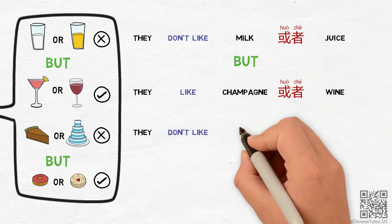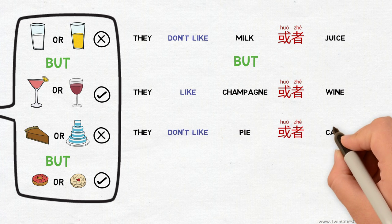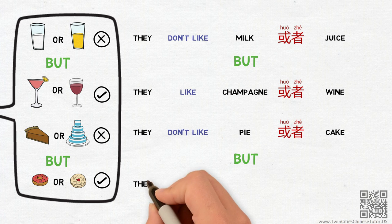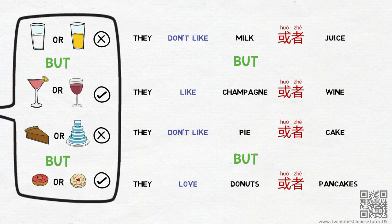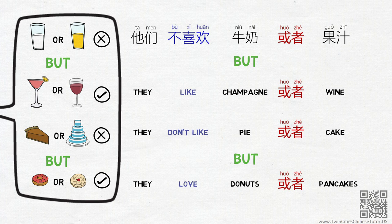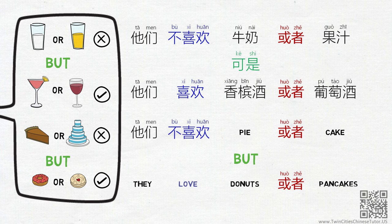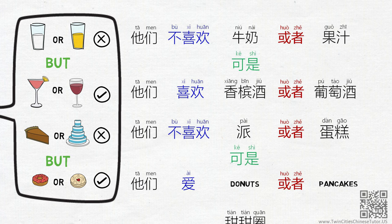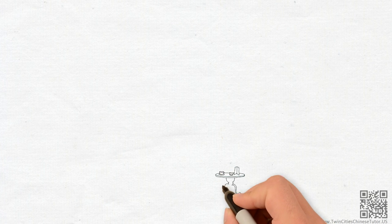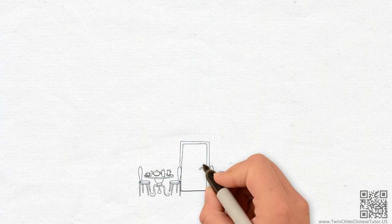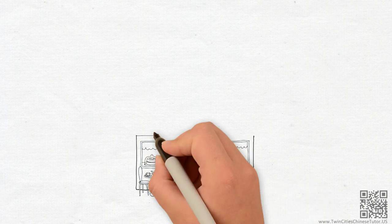They don't like pie or cake, but they love donuts or pancakes. In Chinese, they are, 他们不喜欢牛奶或者果汁, 可是他们喜欢香冰酒或者葡萄酒。 他们不喜欢派或者蛋糕, 可是他们爱甜甜圈或者松饼。 Now you know what these picky Chinese guests like and don't like. I'm sure that you'll cook a great meal for them.